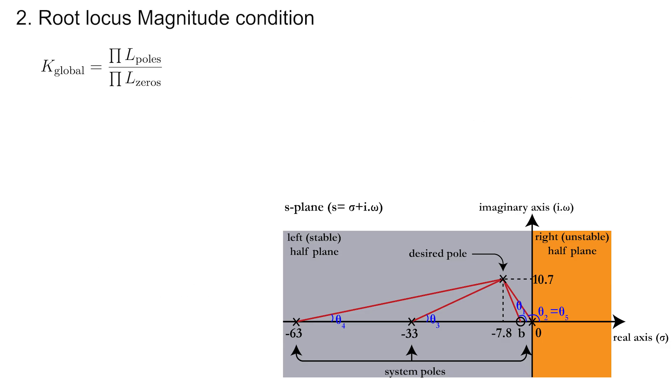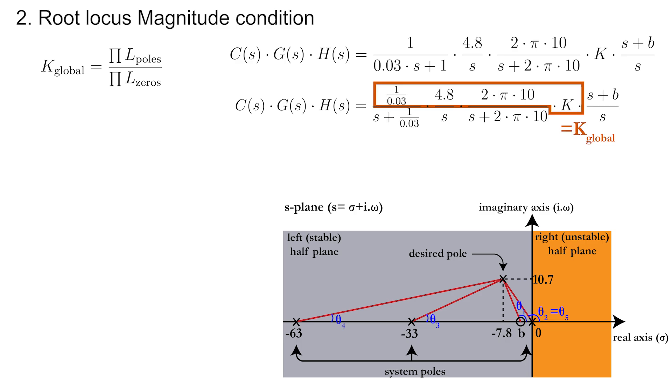To determine K, you can use the magnitude condition of the root locus, which says that the product of the length between the desired pole and the system poles divided by the product of the desired poles and the system zeros is equal to the full amplification K-global throughout the open-loop system. The full amplification K-global can easily be determined from the open-loop system equations and include the parameter K as well. Taking the product of all known terms gives a correlation between K-global and K that is equal to 10053.